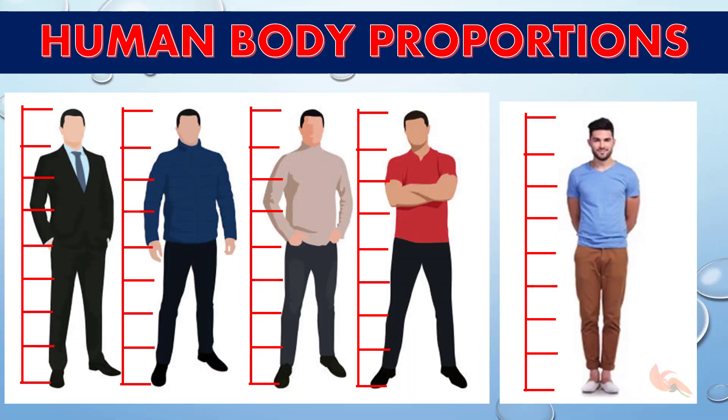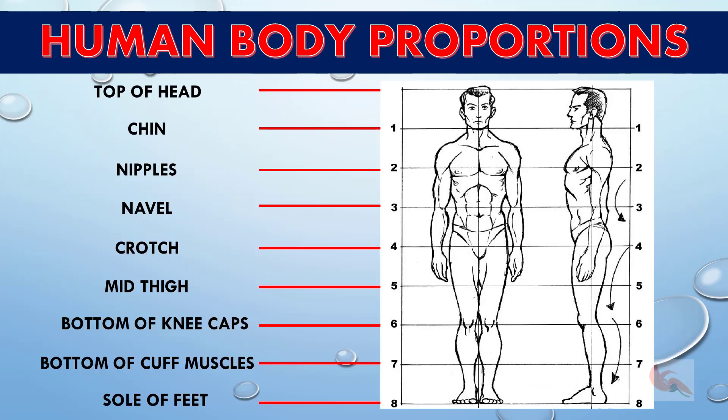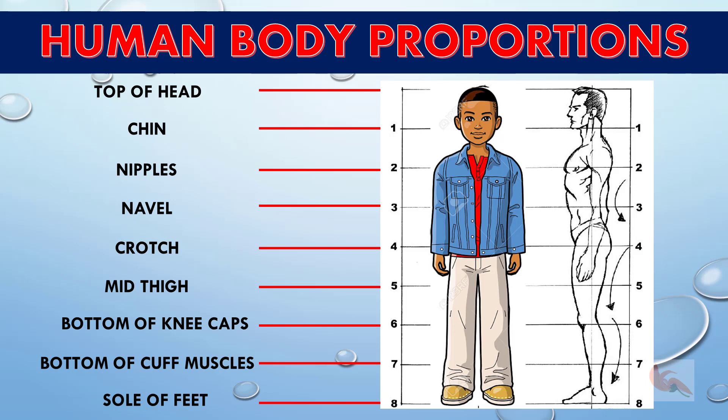However, there are some general guidelines that may lead us to building up a human figure which can be modified to suit a particular individual. The average body proportions formula holds good only when we are seeing someone straight from front and they too are standing straight.